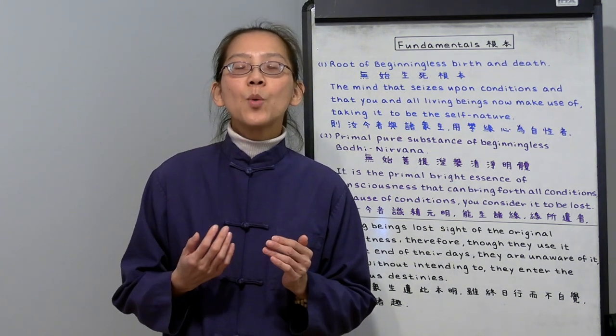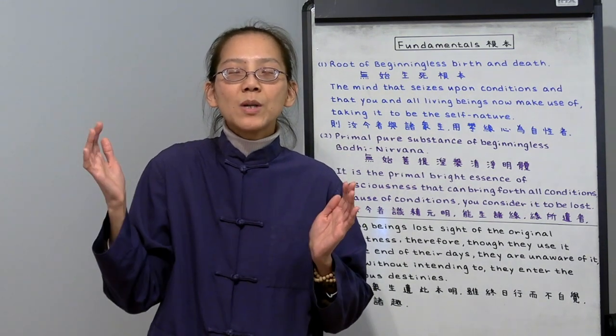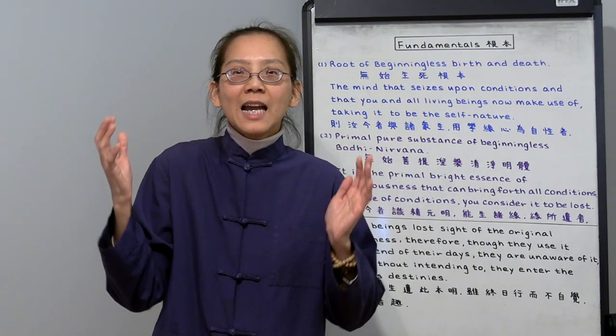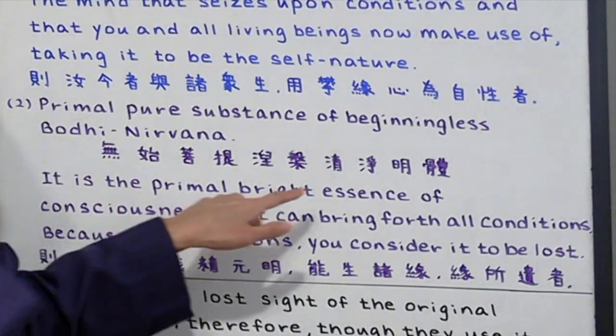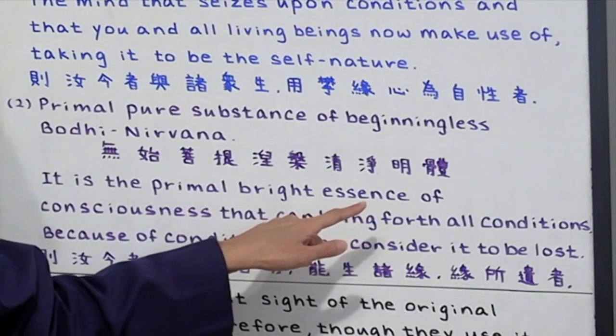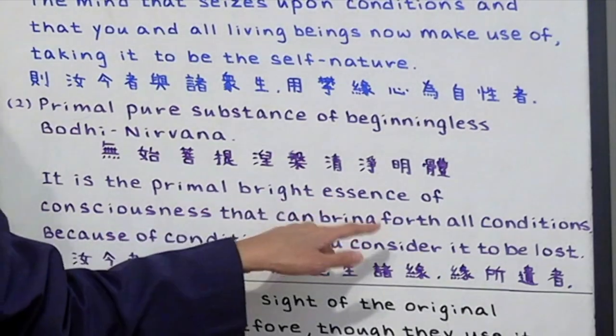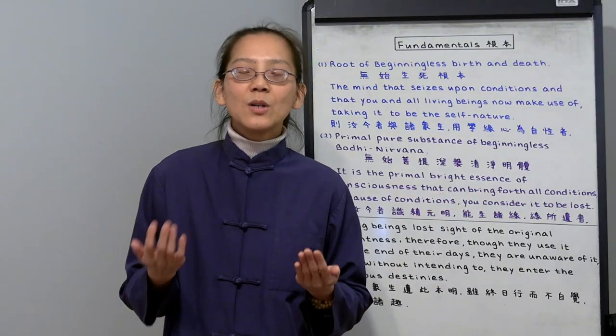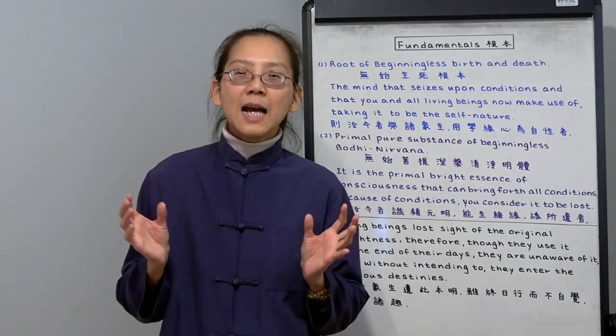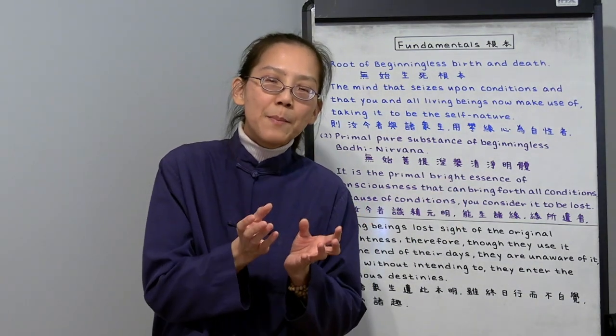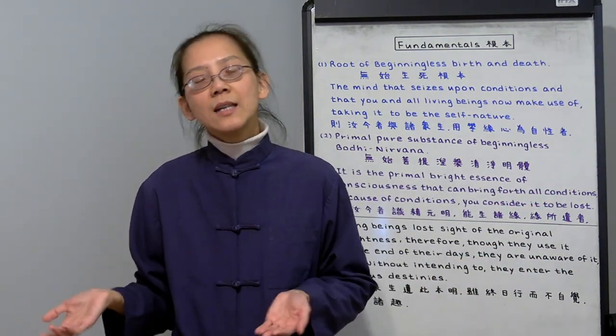It is the mind before we start perceiving the external conditions, before we start thinking, judging, and discriminating. That is our pure mind. This pure mind actually creates all the external conditions. But we don't know that. We are attached to external conditions and we lost our pure mind. So we unjustly lost our pure mind. It's like we are attached to a little bubble of the ocean and lost the entire ocean out of ignorance.